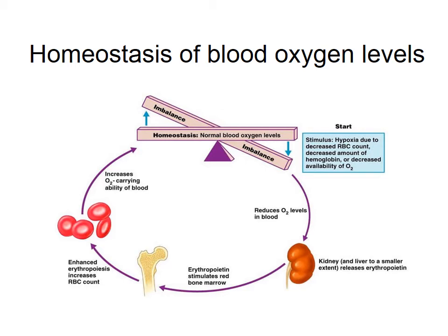Hypoxia would be detected by the kidneys, which monitor blood volume and oxygen content of the blood. The kidneys would then release the hormone erythropoietin, or EPO, which stimulates red blood cell production. Pro-erythroblasts would develop more quickly into reticulocytes. This would complete the negative feedback system by leading to an increase in red blood cells and therefore an increase in oxygen delivery.